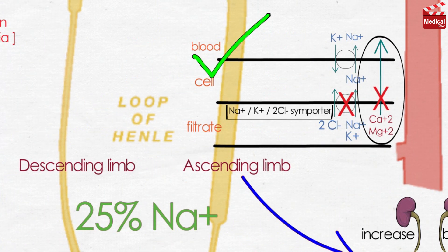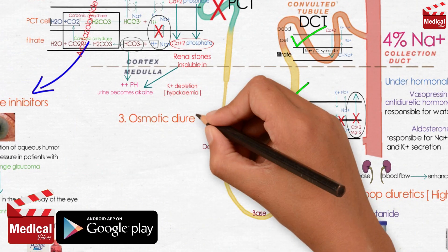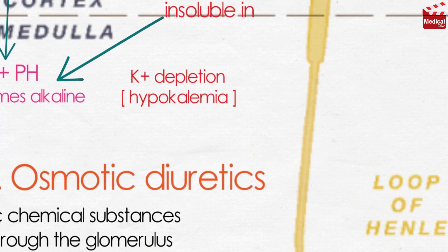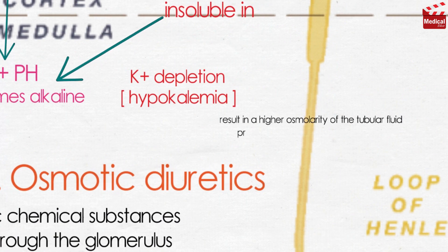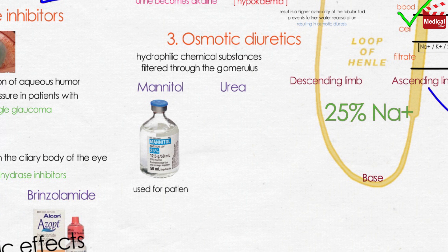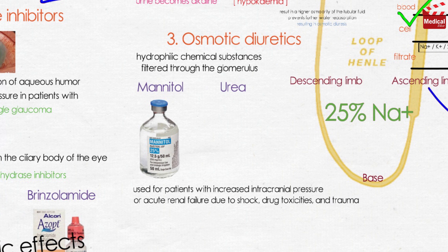The last category discussed in this lecture is osmotic diuretics. These agents are hydrophilic chemical substances that are filtered through the glomerulus, such as mannitol and urea. They result in a higher osmolarity of the tubular fluid and prevent further water reabsorption, resulting in osmotic diuresis. Osmotic diuretics are used to increase water excretion rather than sodium excretion, so they are not useful for treating conditions in which sodium retention occurs. They are used for patients with increased intracranial pressure or acute renal failure due to shock, drug toxicities, and trauma. Maintaining urine flow preserves long-term kidney function.